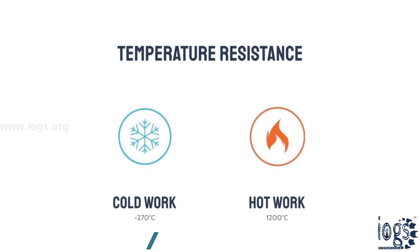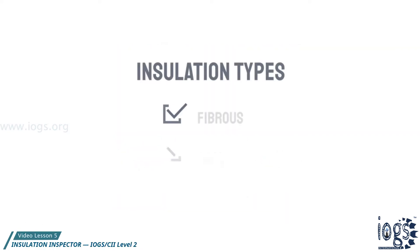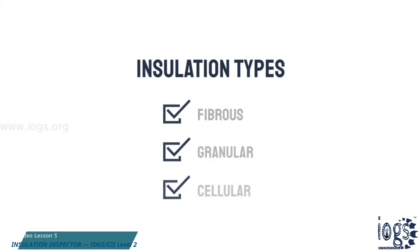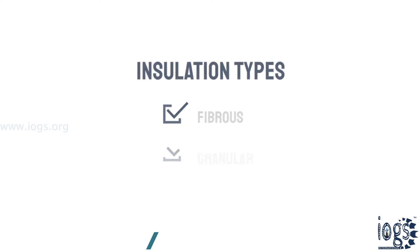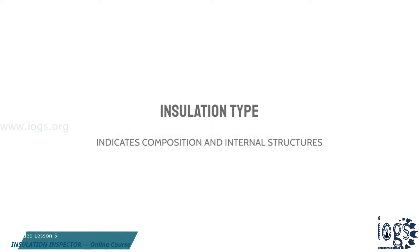For hot work, the temperature resistance can go up to 1200 degrees Celsius. Various types of insulation materials are used to resist these temperature ranges. The insulation type indicates the composition and the internal structure of the thermal insulation material.